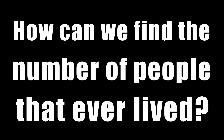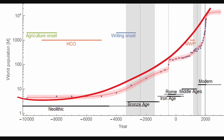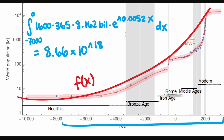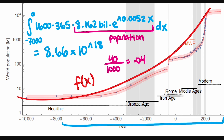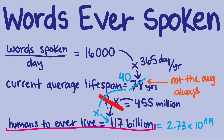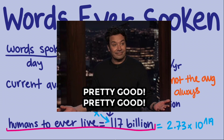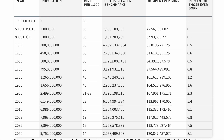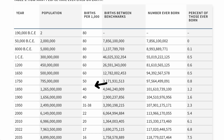You might think that's math overkill when simple multiplication would do, but we were only able to do that simple multiplication by looking up the number of people that have ever lived — and that value is also calculated using integration. How could we find the number of people that ever lived? We could add up the number of people born every year, approximated with a mathematical model. Multiplying our population model by a birth rate of about 40 births per 1,000 people, we integrate over all years with significant human populations and get about 59 billion — about half the 117 billion estimate we found online, but considering our simple model, that's still pretty good.